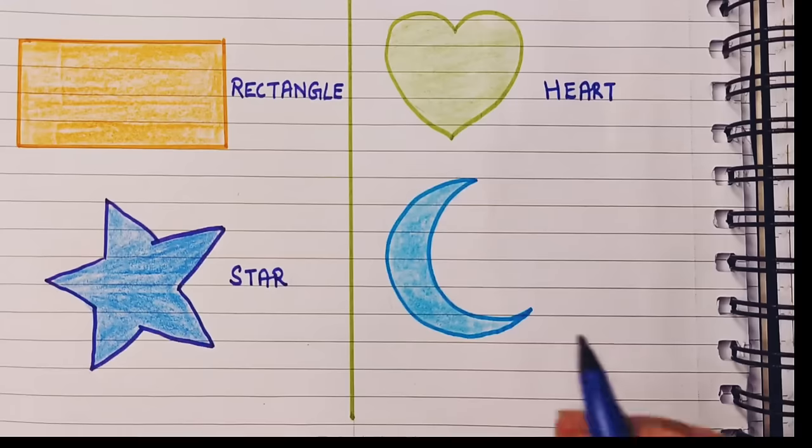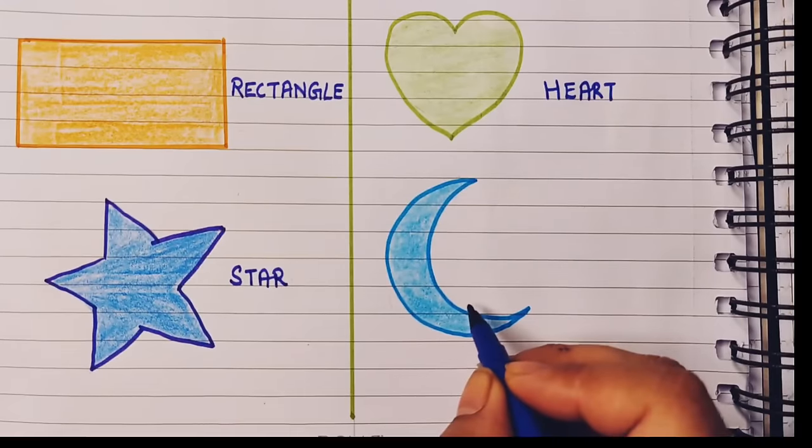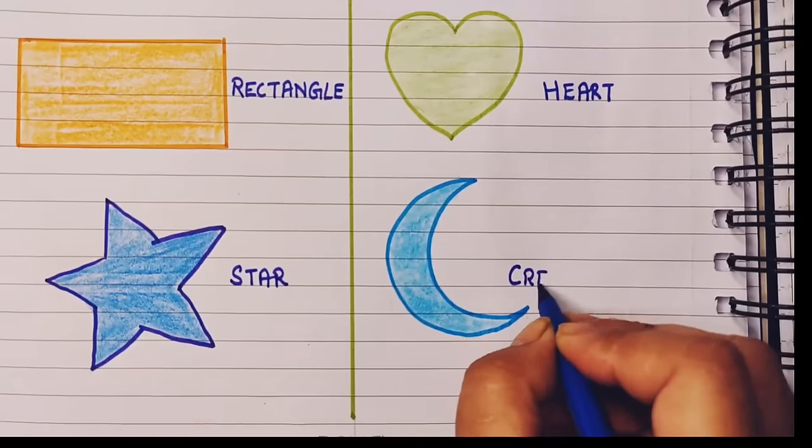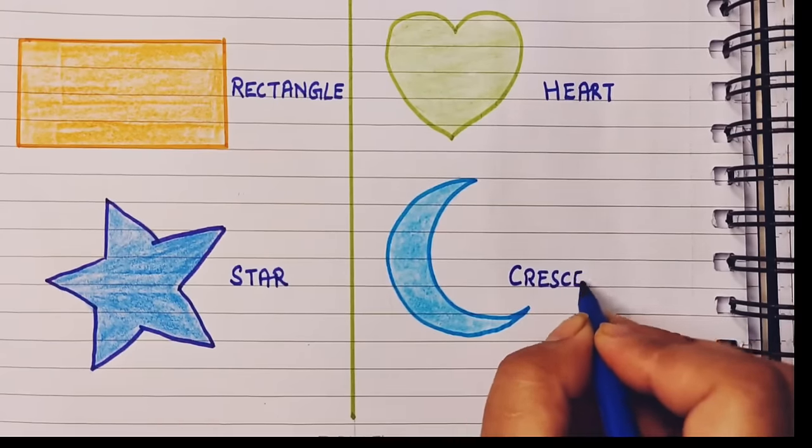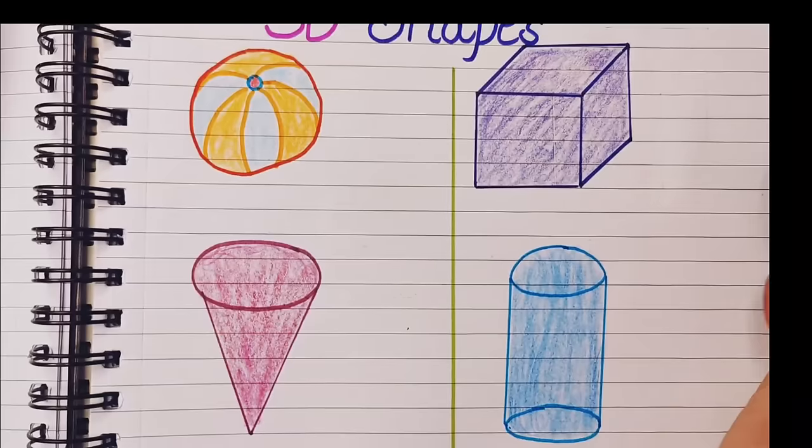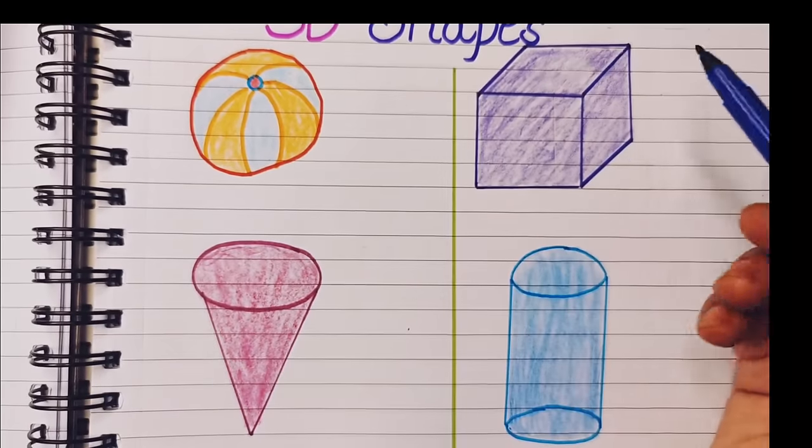The next shape is crescent shape: C-R-E-S-C-E-N-T, crescent shape. Now let us see few 3D shapes. 3D means three-dimensional.